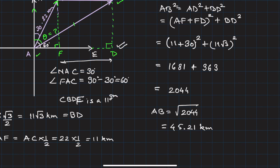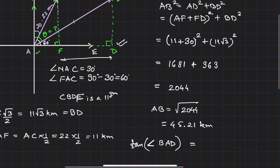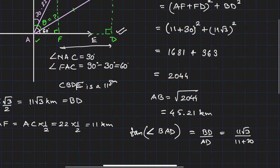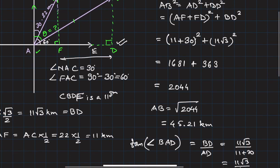Now AB is known. We have to find the bearing. Angle BAD: tan(BAD) = BD/AD = 11√3/41. So angle BAD = tan⁻¹(11√3/41).